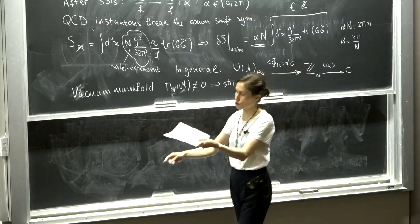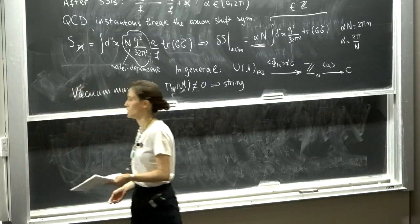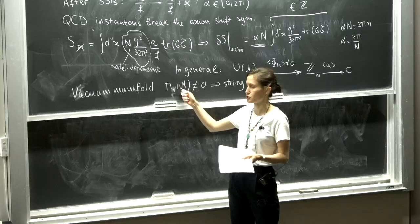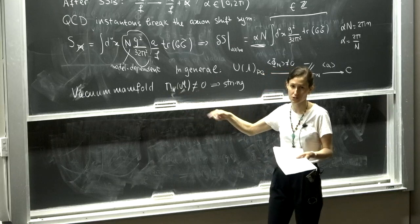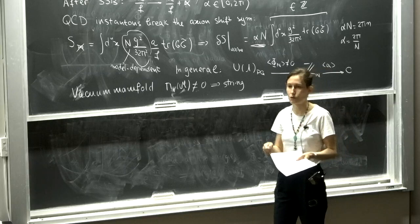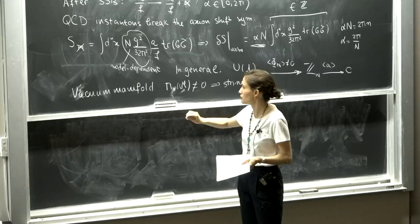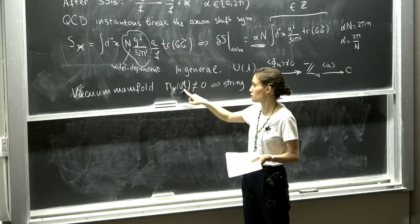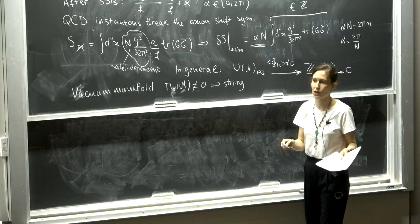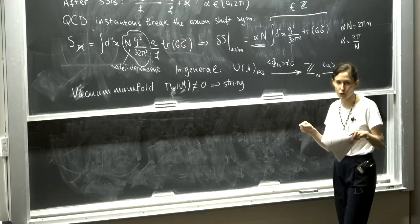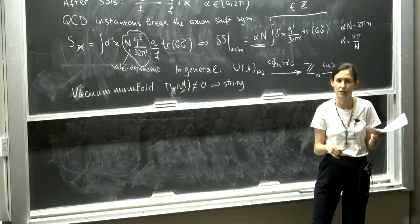It was obviously the case when we were discussing the global cosmic string: the vacuum manifold was parameterized by the phase of phi, so it was very obviously a circle. Maps from the circle to the circle are parameterized by integers — the winding number of the different possible cosmic strings. You can also generalize: pi-naught would be maps from the vacuum manifold to S0, which is two points. In our discussion of the domain wall, our vacuum manifold had two points — plus V and minus V — giving us the kink and anti-kink, a Z_2 in this case.